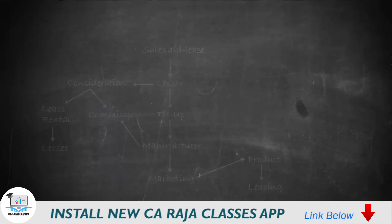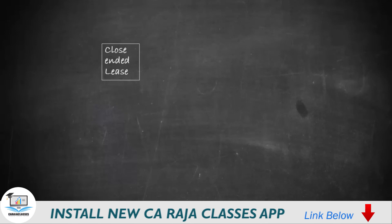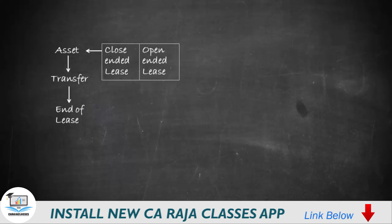The fourth type of lease is the closed-ended lease, in which the asset will be transferred to the lessee at the end of the lease period. There is also another type called the open-ended lease, where the lessee has an option to purchase the asset at the end of its useful life or at the end of the lease period.